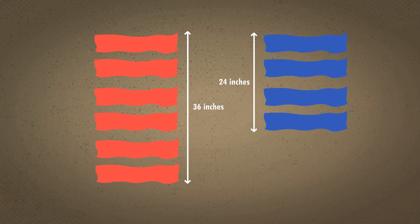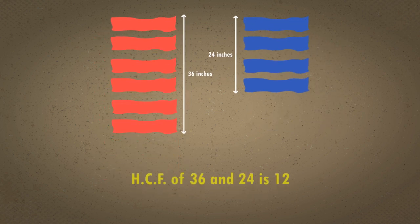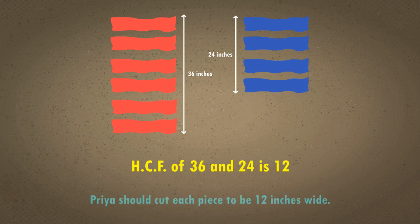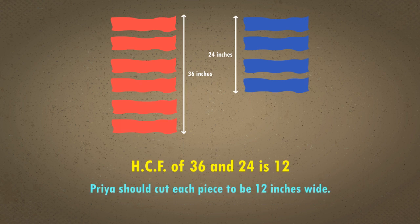Since we are looking for the widest possible strips, we will calculate the highest common factor of 36 and 24. The highest common factor of 36 and 24 is 12. We can say that Priya should cut each piece to be 12 inches wide.